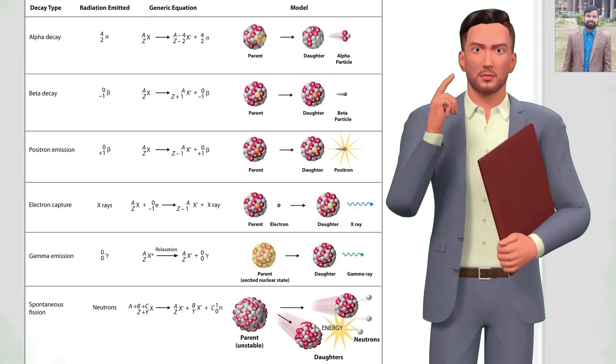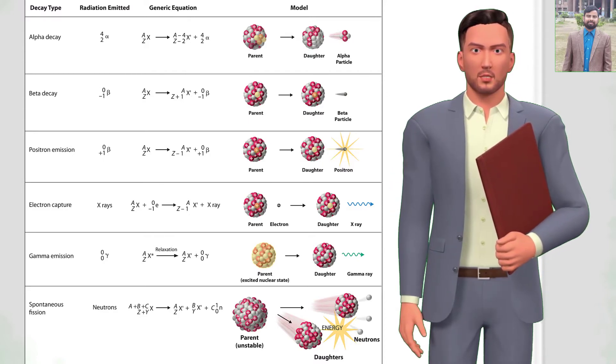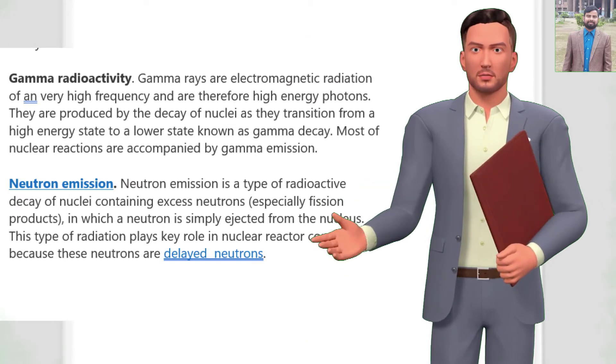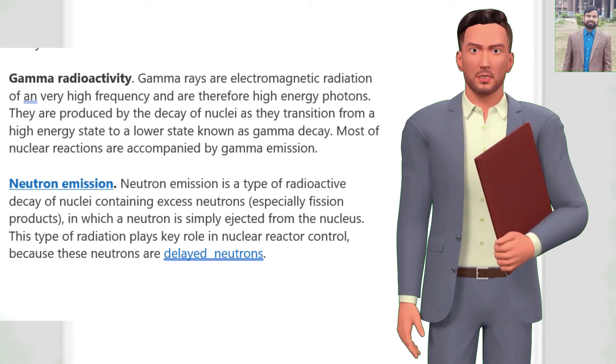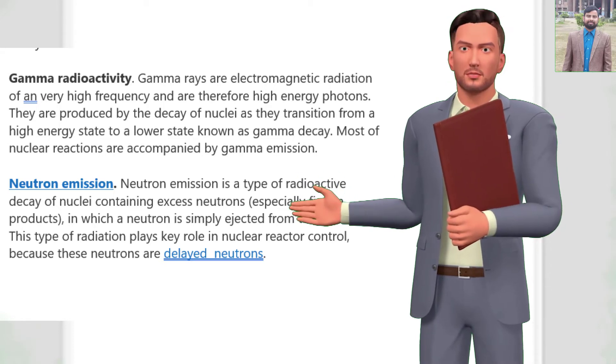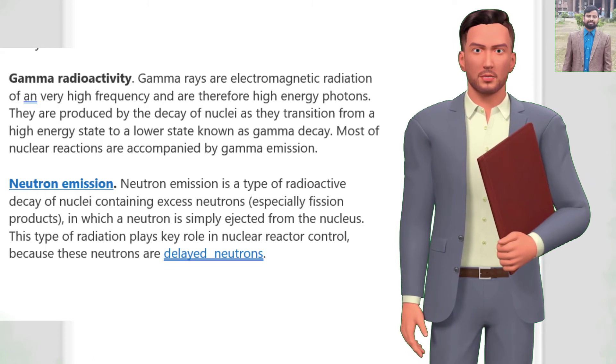Gamma radioactivity: gamma rays are electromagnetic radiation of very high frequency and are therefore high-energy photons. They are produced by the decay of nuclei as they transition from a high-energy state to a lower state known as gamma decay. Most nuclear reactions are accompanied by gamma emission.